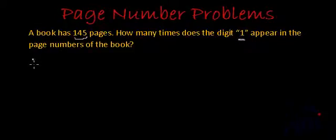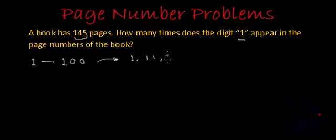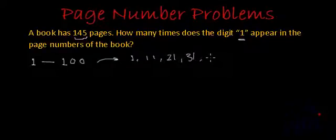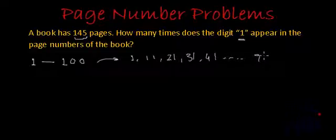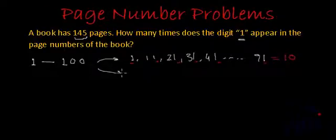Let's take page numbers from 1 to 100. How many times does the units place have a 1 in the numbers from 1 to 100? We have 1, then 11, then 21, then 31, then 41, and so on till 91. So if we count the 1s only at units places, there are total 10 ones.